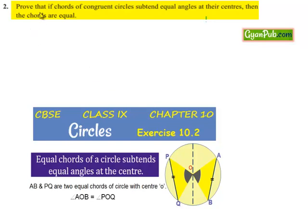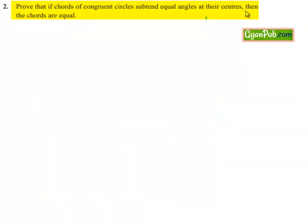Moving on to question number 2, prove that if chords of congruent circles subtend equal angles at their centers, then the chords are of equal length.